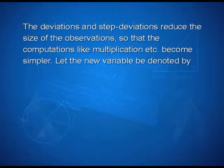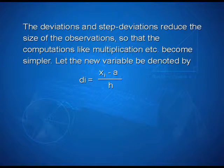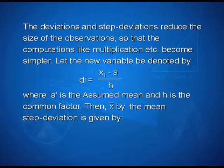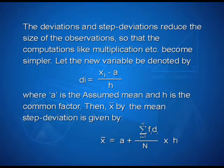The deviations and step deviations reduce the size of the observations so that computations like multiplication become simpler. Let the new variable be denoted by di = (xi − a)/h, where a is the assumed mean and h is the common factor. Then the mean x̄ by step deviation is given by: x̄ = a + (Σfi×di / n) × h.